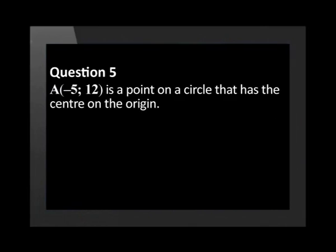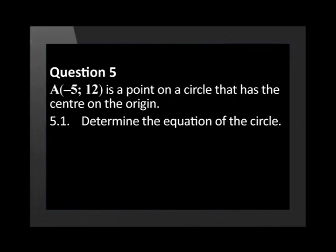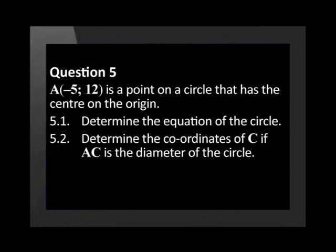A(-5, 12) is a point on a circle that has the center on the origin. Determine the equation of the circle. Determine the coordinates of C if AC is the diameter of the circle.